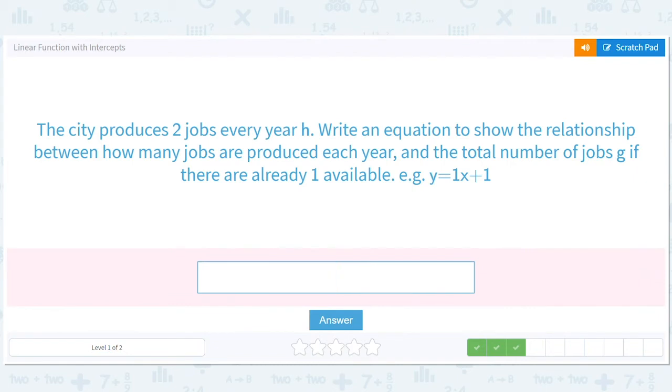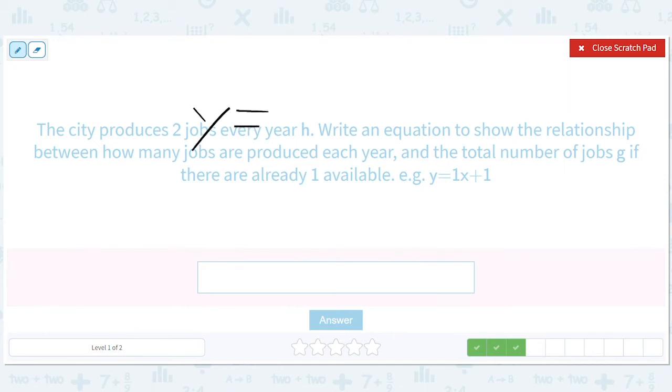The city produces two jobs. So now because we're typing it in, we have to get the letters right. So we're warmed up, we'll get the letters right. So it produces two jobs every year H. So Y equals two jobs every year, so 2x. If there are already one job available, so Y equals 2x plus one. So this is jobs and this is years. So now we just have to figure out what letter. So year is H for some reason, and jobs is G. So it's G equals 2H plus one.